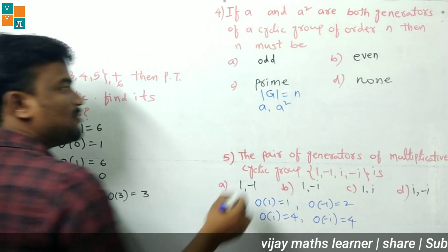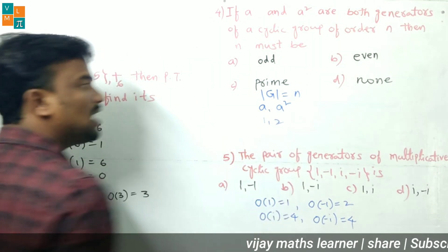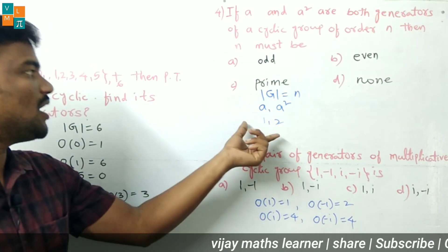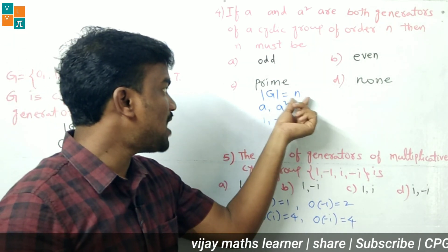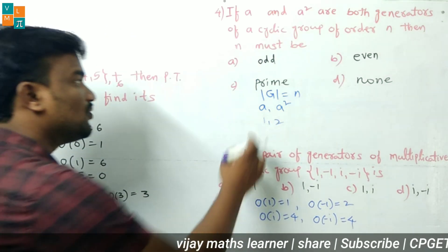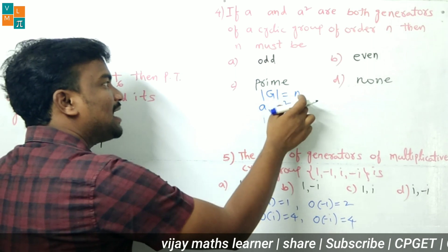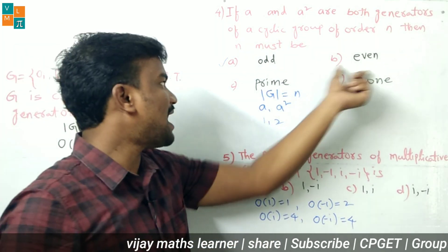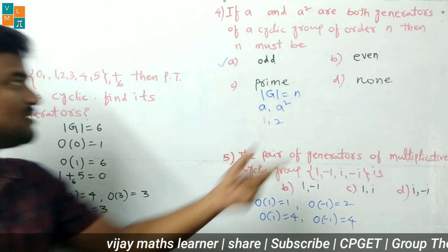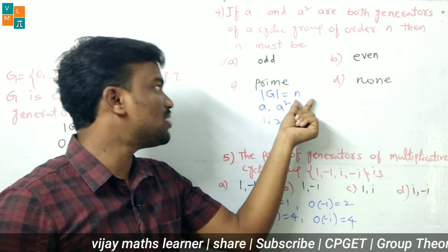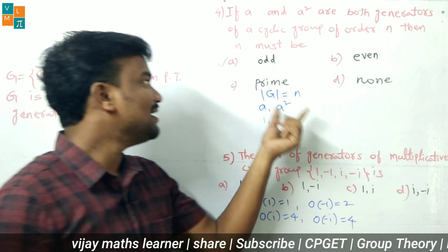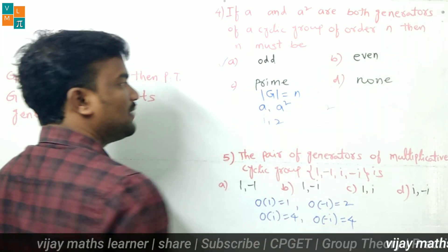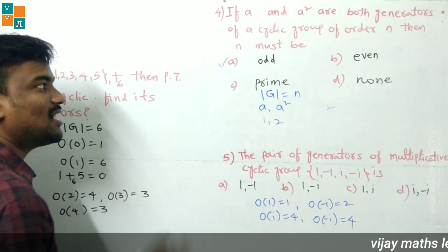For a and a² to both be generators of a cyclic group of order N, 1 and 2 must both be relatively prime to N. If N is even, gcd(2, N) = 2, so 2 is not relatively prime to N, meaning a² would not be a generator. So N cannot be even.